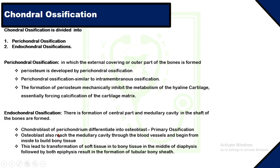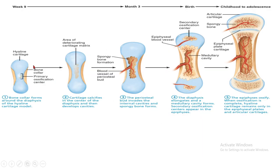In endochondral ossification, the central parts of the bone and medullary cavity in the shaft are formed. Chondroblasts of perichondrium differentiate into osteoblasts at the primary site of ossification, which is the diaphysis of the bone. Osteoblasts also reach the medullary cavity through blood vessels and begin to build bony tissue from the inside. This leads to transformation of soft tissue such as hyaline cartilage into bony tissue at the middle of the diaphysis, followed by both epiphyses, resulting in the formation of a tubular bony sheath.